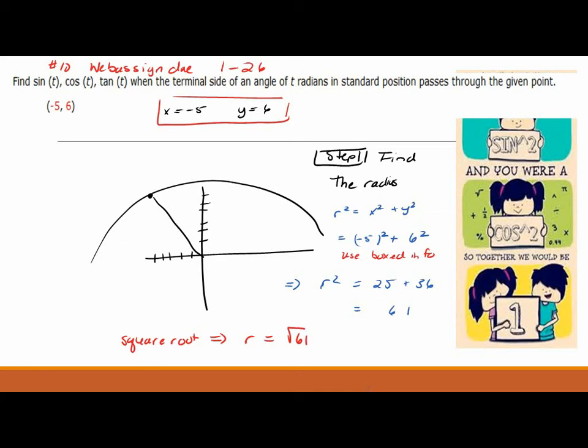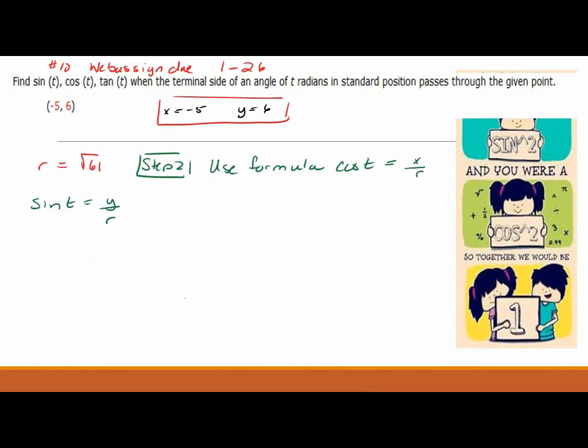Do you see on the side, I have a little strip there? If I was a sine squared and you were a cosine squared, together we would be one. Valentine's Day is coming up soon. You can copy that strip. Here's the formula. Cosine t is equal to x divided by r, which I just got. And sine t is equal to y divided by r.